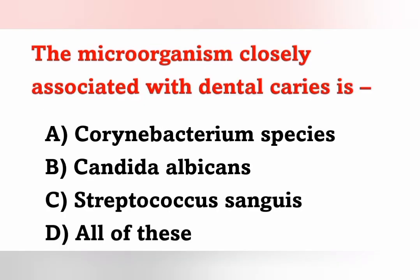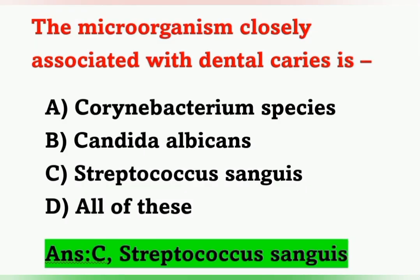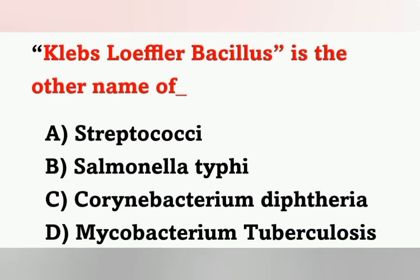Next question: The microorganism closely associated with dental caries is which of the following? Options: A) Corynebacterium species, B) Candida albicans, C) Streptococcus sanguinis, D) All of these. Streptococcus sanguinis is responsible for dental caries. It is closely associated with dental caries. Option C is the correct answer.